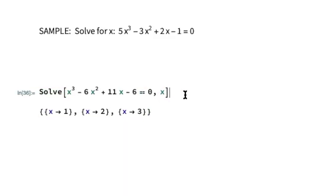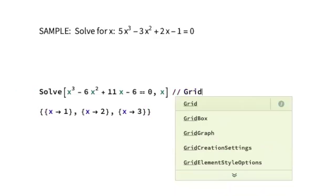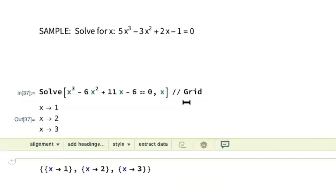We do have an additional option here, which is we can go back to the original command and add double slash Grid. You can see the difference in the outputs. In this case, they're listed vertically. In this case, they're listed horizontally.